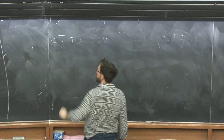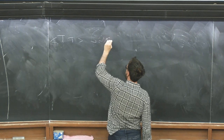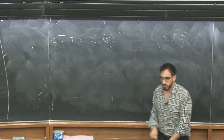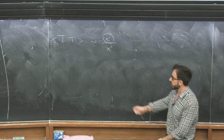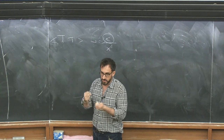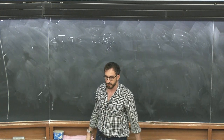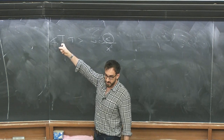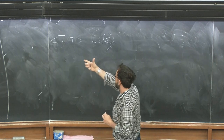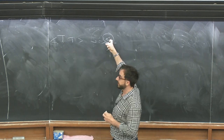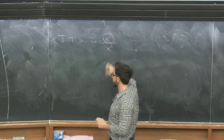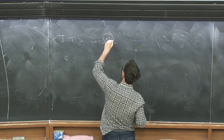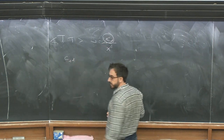The normalization of the stress tensor is canonically fixed because you want the stress tensor to generate translations — you cannot mess with its overall normalization. Given that normalization, the normalization of the two-point function of the stress tensor is interesting, and that is the so-called C central charge, which I'll call C_{4D}.